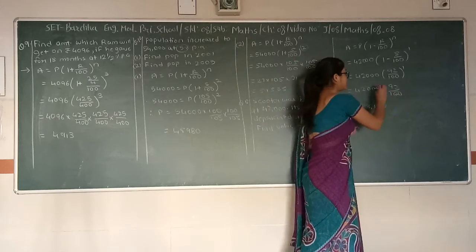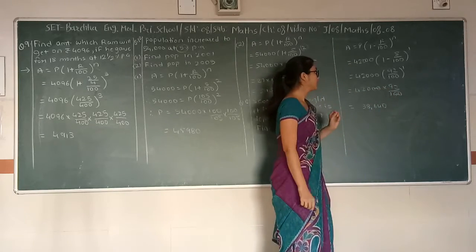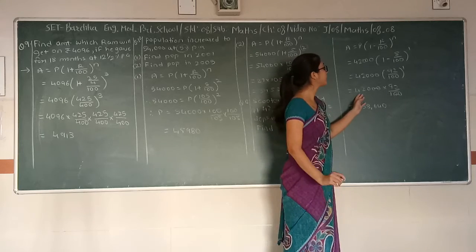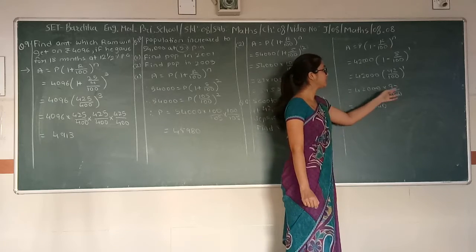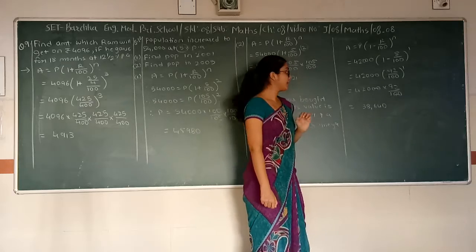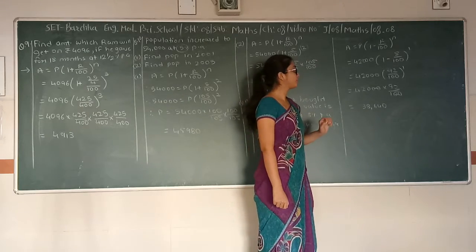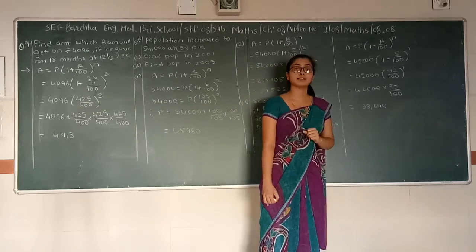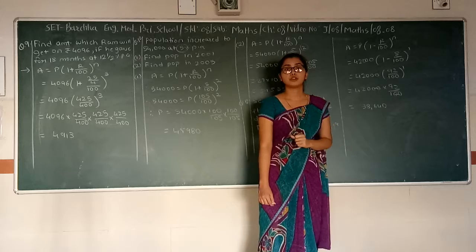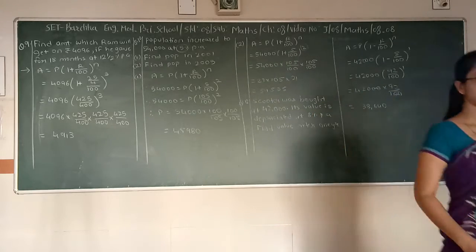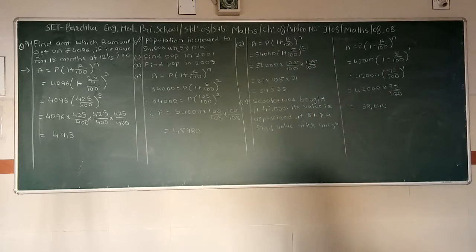After cancelling the zeros, we compute the final value. The answer is 38,640.